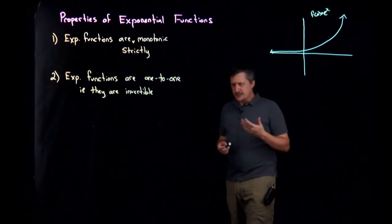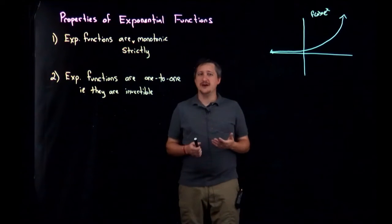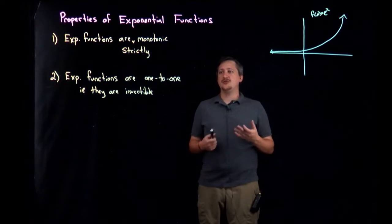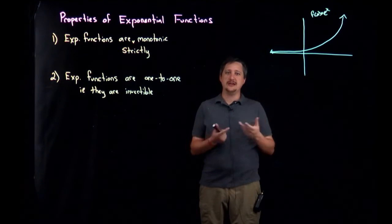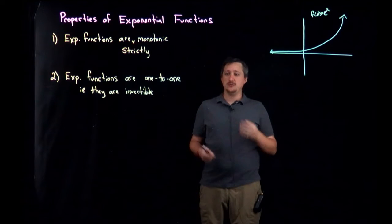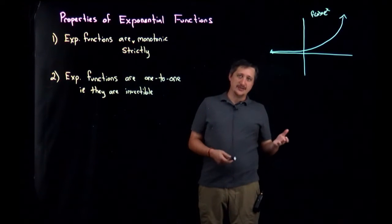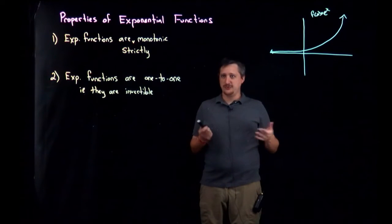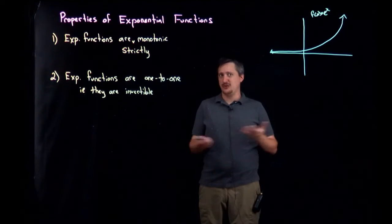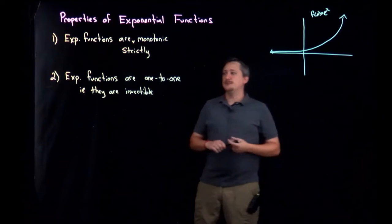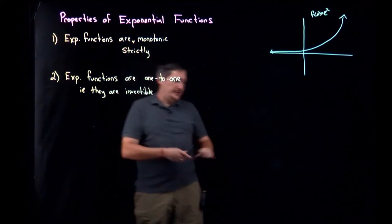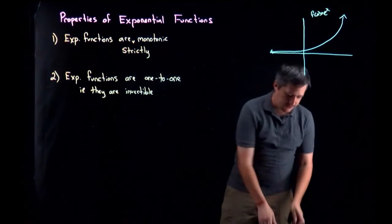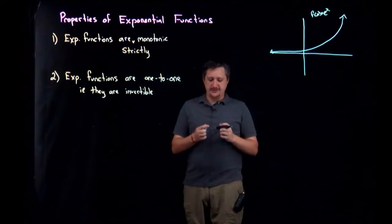In particular, they allow us to justify situations where if we have a base to a power and that same base to another power that are equal, we can then set the powers as equal. Once we get to the point of logs, we'll discover that that's really just because we're using logs without using logs. So this is sort of a bridge to that gap right now. Let's look at an example of this.